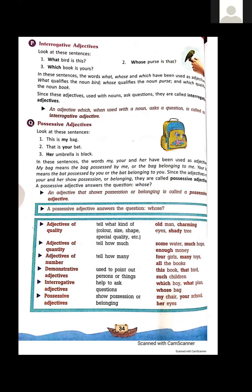For example, 'What is your name?' — no noun follows what here; there is a helping verb. But in 'What bird is this?' there is a noun after what. That is the difference between these two sentences. Similarly, 'whose purse' and 'which book' have nouns after these interrogative words, so what, which, and whose are all interrogative adjectives here. Also note the question mark at the end of interrogative sentences.